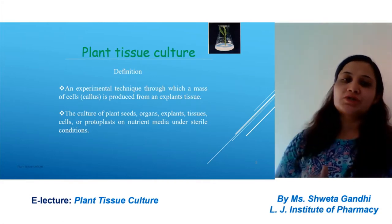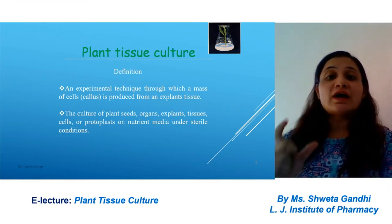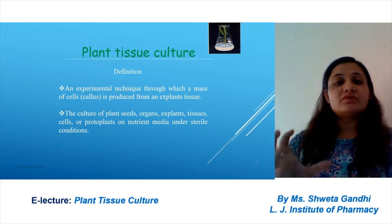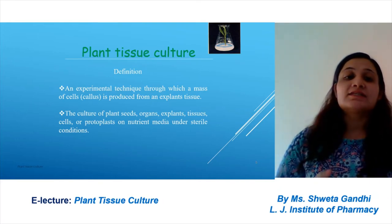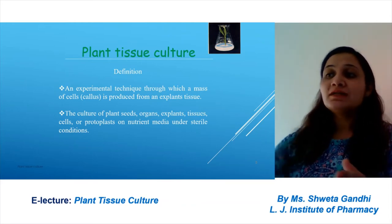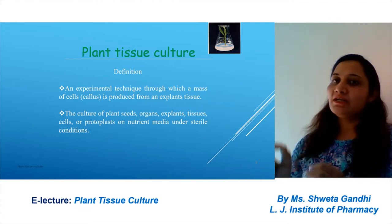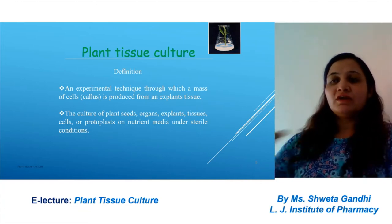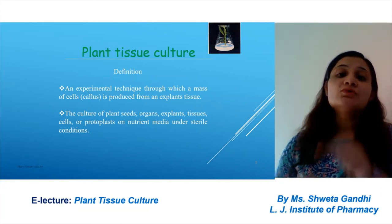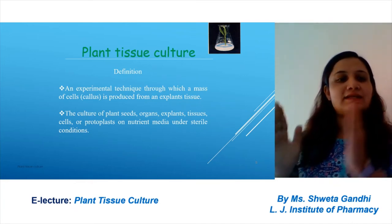First, the definition of plant tissue culture. It is a technique through which a mass of cells is produced — you have to remember that the mass of cells is called the callus. This callus is produced from an explant. The part of the plant which is used for plant tissue culture is the explant. For example, if I take a leaf, cut it, and sterilize it, that leaf part used is the explant.